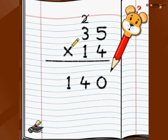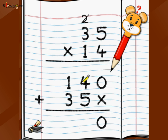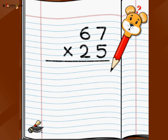Now for the second row, we put an X to leave that position empty, then multiply by the second digit of the multiplier, which is 1. 1 × 5 is 5, 1 × 3 is 3, and there is no other digit so we stop. Finally we do addition: 0 + X is 0, 4 + 5 is 9, and 3 + 1 is 4. The magic bunny is happy, which means we have the right answer — 35 × 14 = 490.